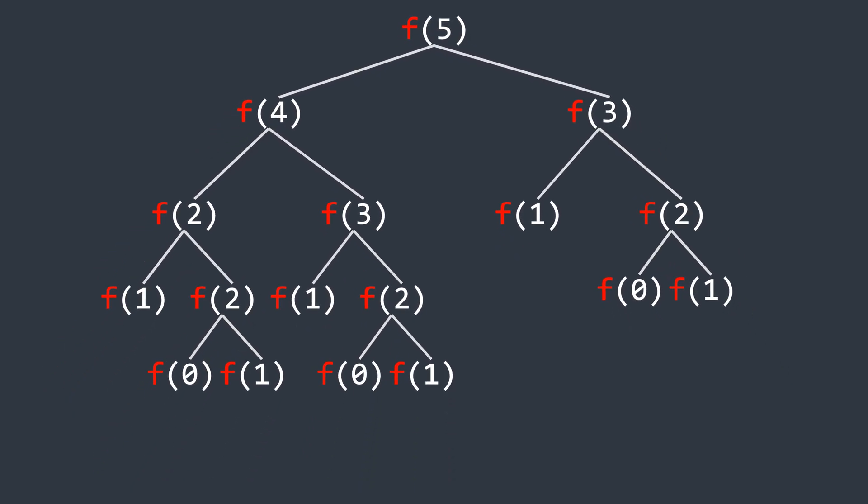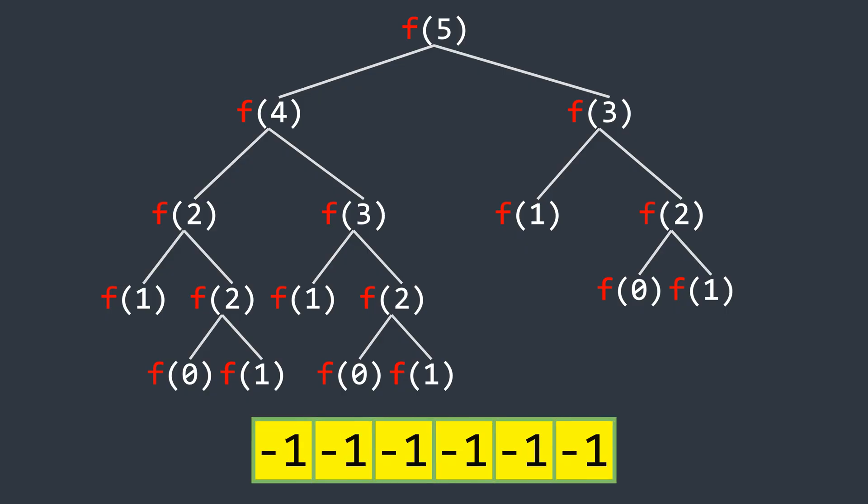First, let's look at the top-down optimization approach known as memoization. We begin by initializing an array of size n plus 1 and set all values to negative 1. This represents that the values at those indices are not yet calculated.